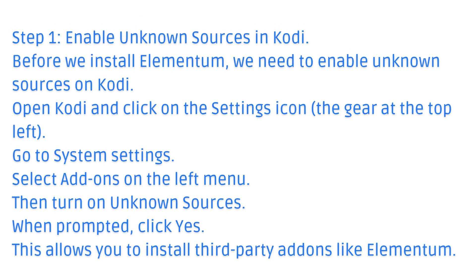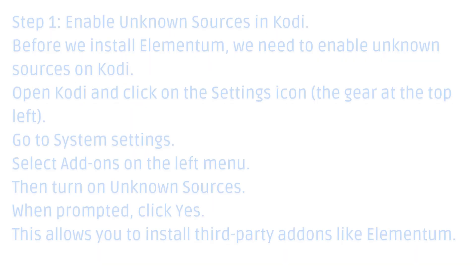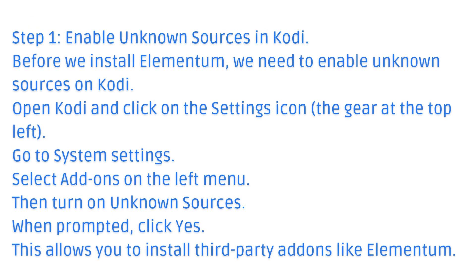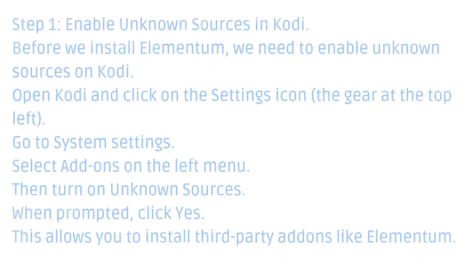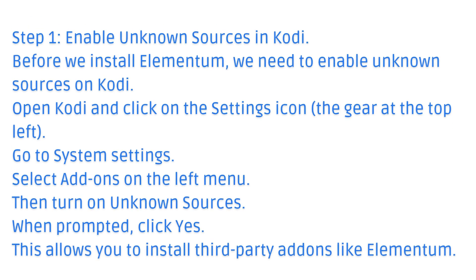Step 1: Enable unknown sources in Kodi. Before we install Elementum, we need to enable unknown sources on Kodi. Open Kodi and click on the settings icon. Go to system settings. Select add-ons on the left menu, then turn on unknown sources. When prompted, click yes. This allows you to install third-party add-ons like Elementum.